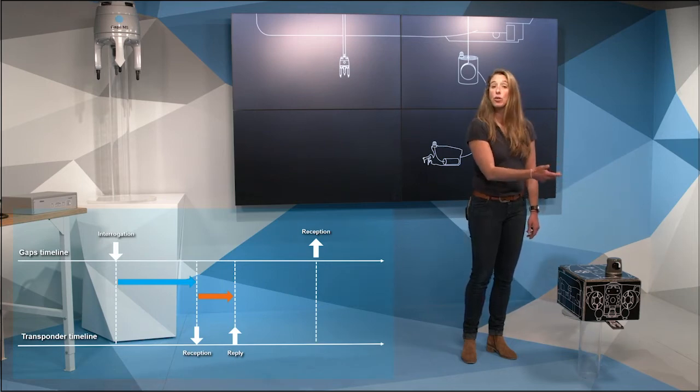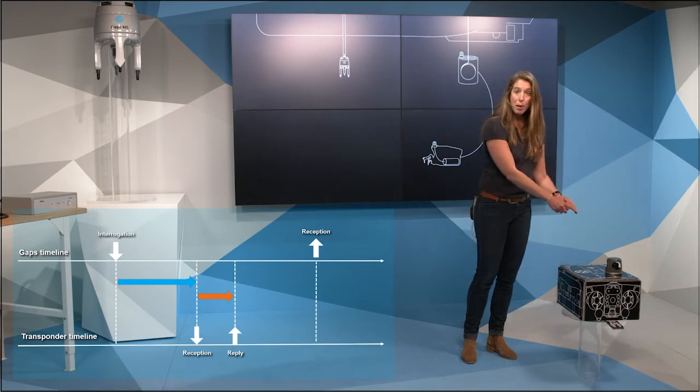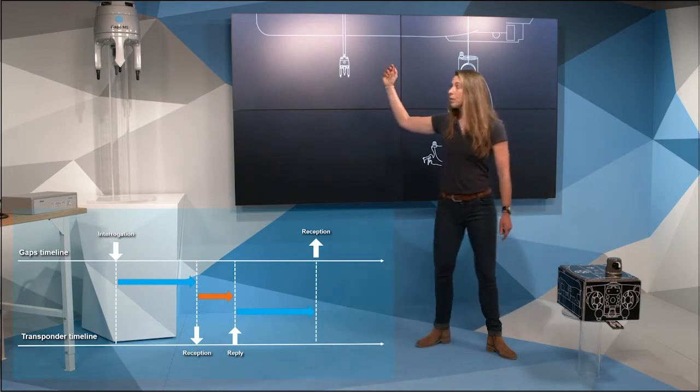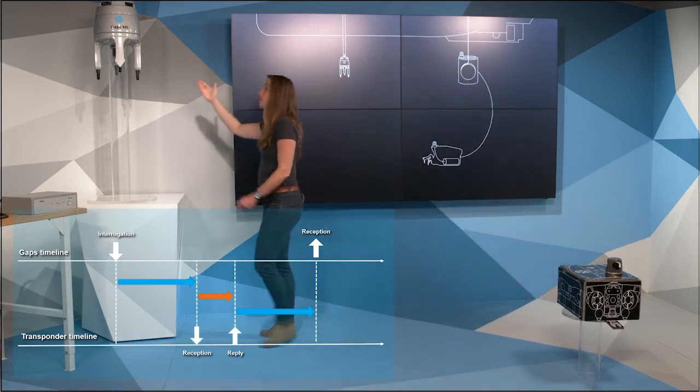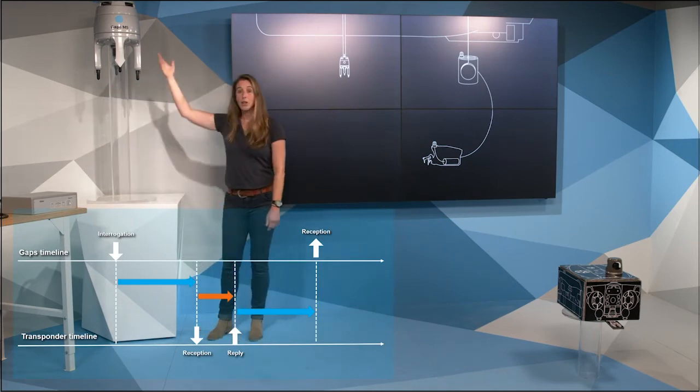After this silent time, the beacon replies to the GAPS. This is the second travel time. Then the GAPS receives the signal on the four hydrophones and computes the absolute position.